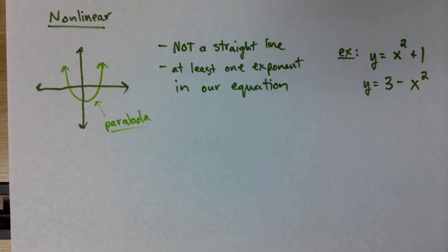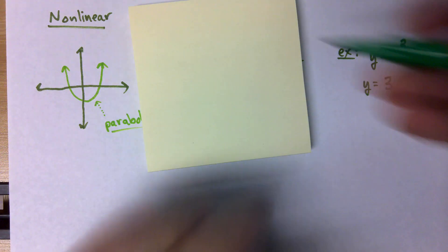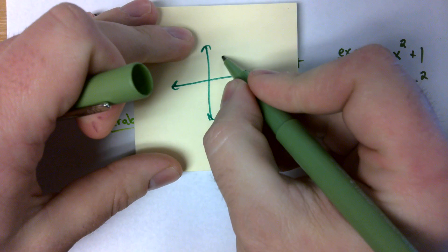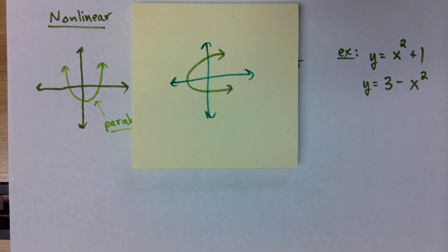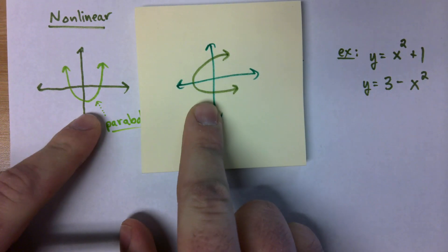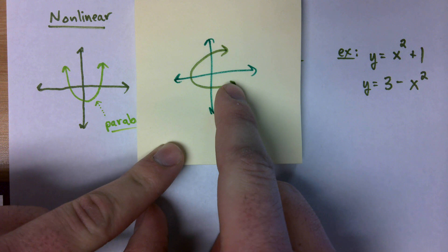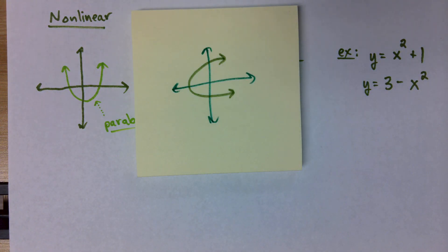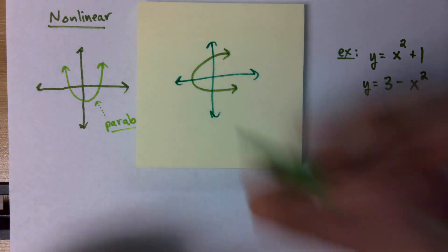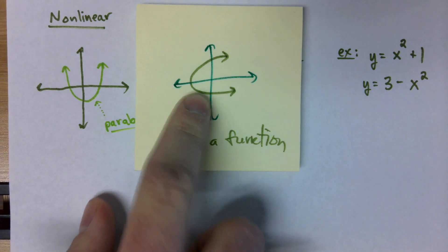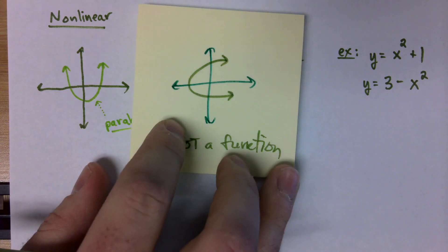Parabolas can also look like this — facing sideways like a C. Parabolas are always non-linear because they're not a straight line; they're curved. Now, parabolas may also look like this, and this is where things get tricky. These two parabolas look very similar but they're very, very different. This one looks more like a U; this one looks more like a C. When we look at both of these, we may go, okay, I see that those are both non-linear — they must both be functions. But that's actually not correct. This C-shaped parabola is not a function, while the U-shaped graph is a function.